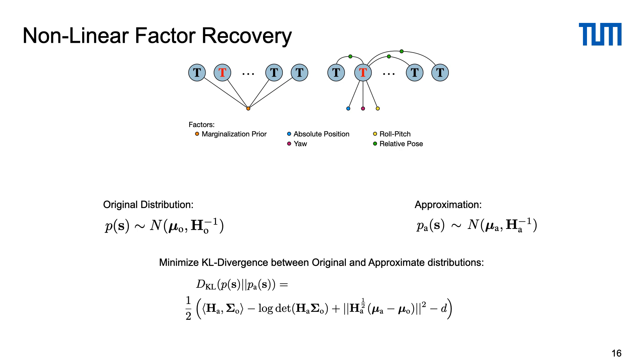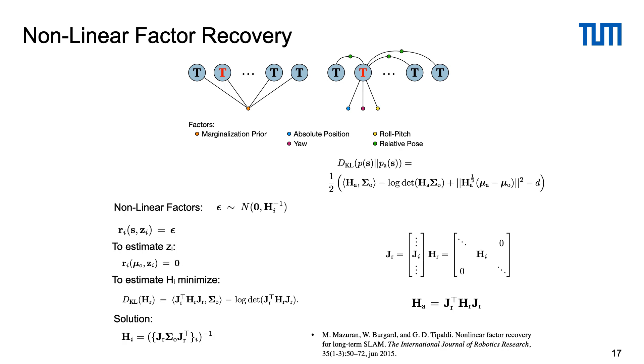To quantify how well our approximate distribution represents the original one we use KL divergence. In general, minimizing KL divergence between two distributions requires iterative methods and can be rather slow, but in our particular case the closed form solution exists. We follow an approach called non-linear factor recovery that guarantees that the reconstructed distribution has a minimal possible KL divergence from the original one.